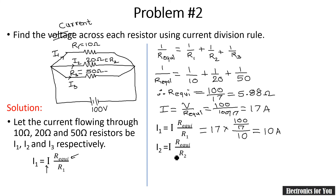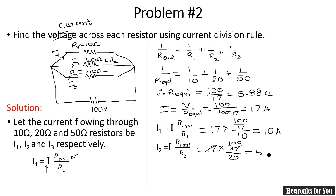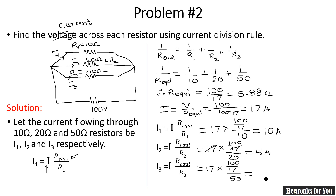Similarly, I2 equals I times R-equivalent upon R2. Here I is 17 amperes, R-equivalent is 100 over 17, and R2 is 20 ohms. The 17s cancel and 100 over 20 equals 5 amperes. So I2 equals 5 amperes. Similarly, I3 equals I times R-equivalent upon R3, which is 17 times (100 over 17) over 50, giving 100 over 50 equals 2 amperes. So I3 equals 2 amperes.